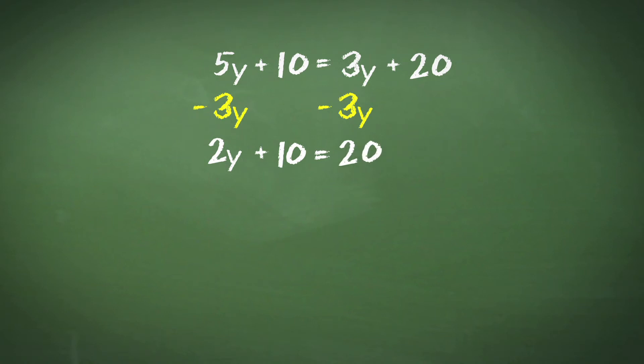So 2y plus 10 equals 20. And then it becomes easy, we just subtract 10 from both sides. 2y plus 10 minus 10 equals 20 minus 10, to give us 2y equals 10.